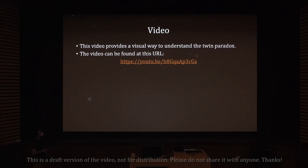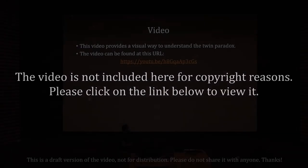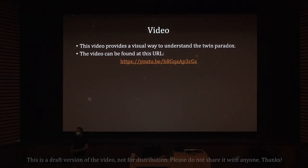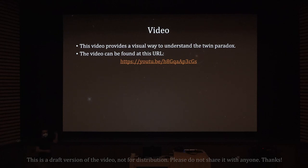I'm going to show you a video that provides a visual way to understand the twin paradox — it sends messages through light beams from one twin to the other. In special relativity, weird things happen, but they can be explained. There are many different ways to explain the twin paradox; I'll show you another way in a bit.